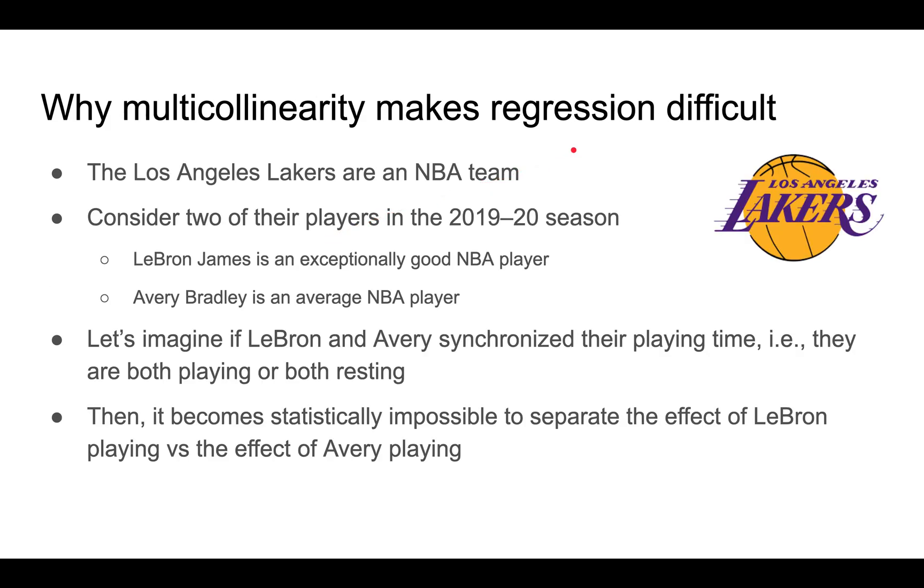I'm going to use an example to explain why multicollinearity can make regression difficult. As most of you know, there's an NBA team called the Los Angeles Lakers. In the 2019-20 season, there were two players called LeBron James and Avery Bradley. Everyone knows LeBron James is exceptionally good, whereas Avery Bradley is considered average by NBA standards.